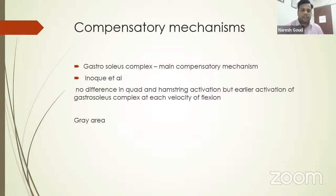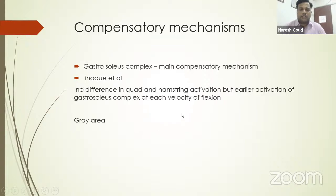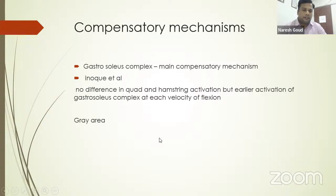The main compensatory mechanism in a PCL-deficient knee is the gastrosoleus complex. Enoch et al. and Fanmbond et al. found the gastrosoleus complex activates earlier with increased velocity of flexion in PCL deficiency, with no difference in quadriceps and hamstring activation. Multiple papers mention different results — some noting quadriceps or hamstring weakness — but the common finding across all is that the compensatory mechanism is the gastrosoleus complex. This remains a gray area requiring more research.